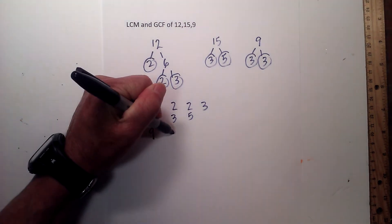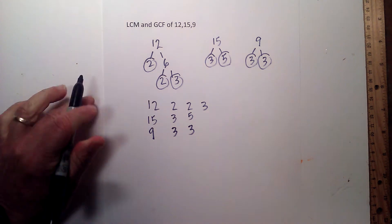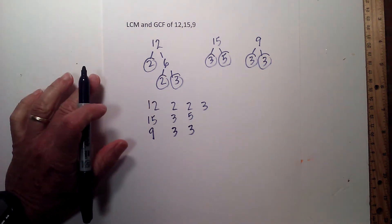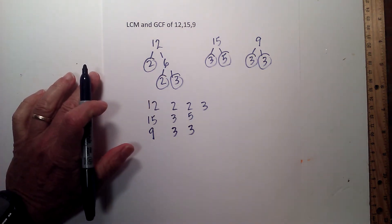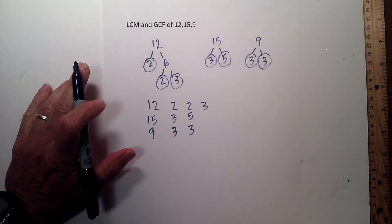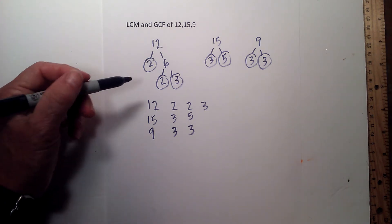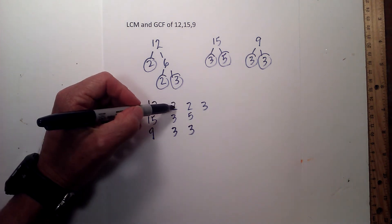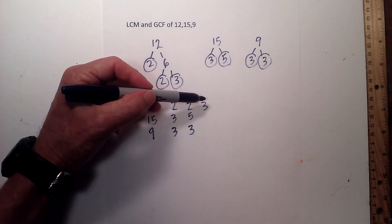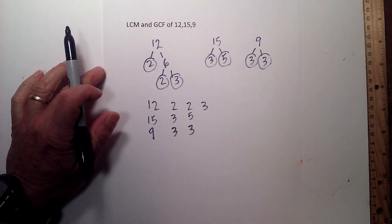The next thing I do is remember: the lowest common multiple is the smallest number that all three numbers will divide into evenly. So I basically multiply all the prime factors; however, if a factor appears in more than one number, you only multiply it once.